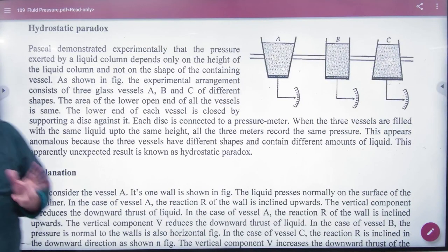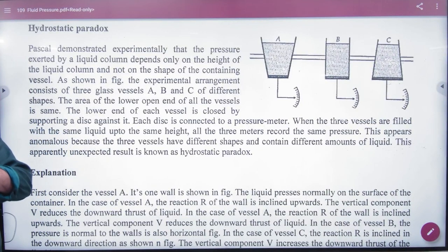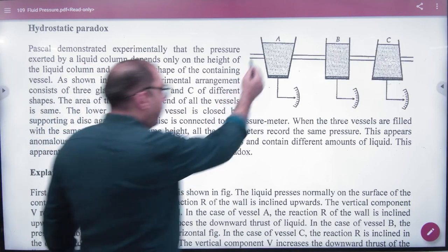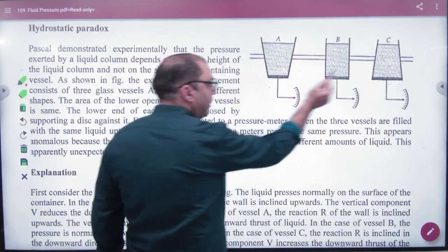The Hydrostatic Paradox says that you have many vessels in different shapes. Like this is one vessel, this is one vessel, this is one vessel.